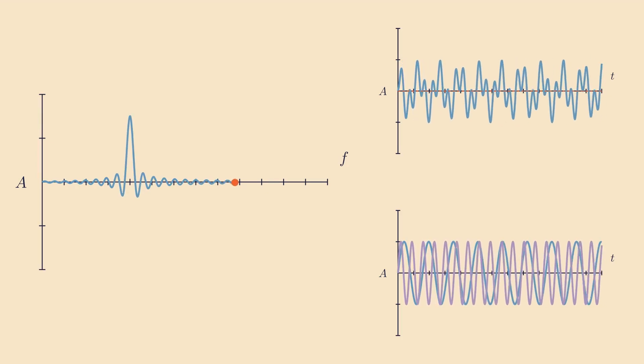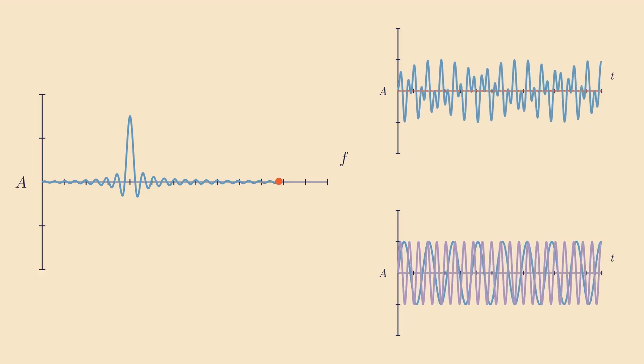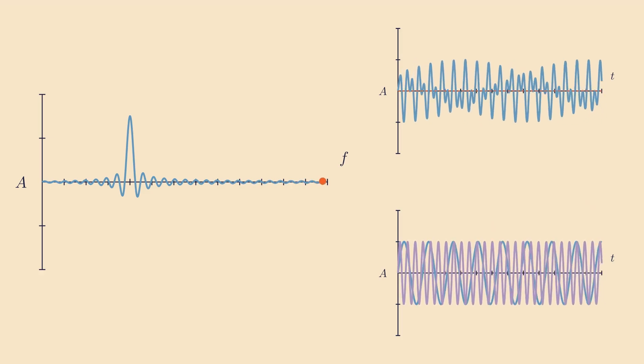Remember, our ultimate goal is to find the extra notes that are present in our vibrato, and the Fourier transform would tell us exactly that.